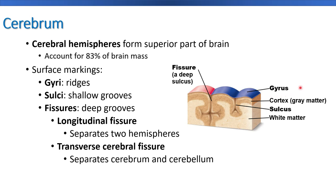Looking at the image, this line is pointing to this gyrus and this line is pointing to this sulcus. We also have deeper grooves known as fissures. One is known as the longitudinal fissure, which runs in the mid-sagittal plane of the brain and divides the cerebrum into the left and right hemispheres. It goes all the way down to the inner structure known as the corpus callosum. And then we have the transverse cerebral fissure, which separates the cerebrum from the cerebellum.